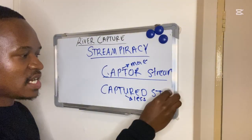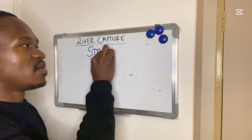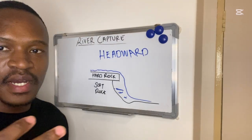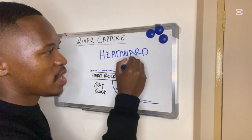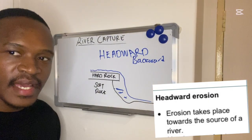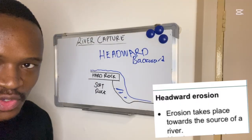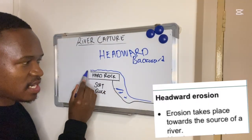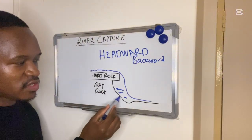Before we dive deeper into this topic, you need to understand headward erosion, which is the same as backward erosion. This is when a river erodes back towards its source. Looking at this diagram, I have a hard rock at the top and a soft rock — also called a less resistant rock — below it, with a river flowing above.